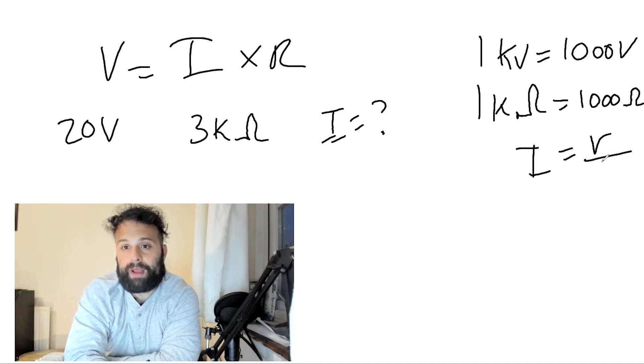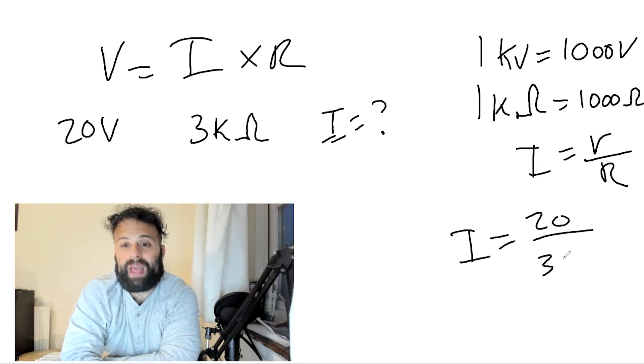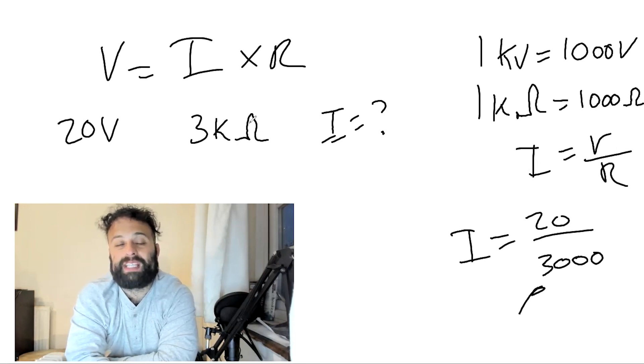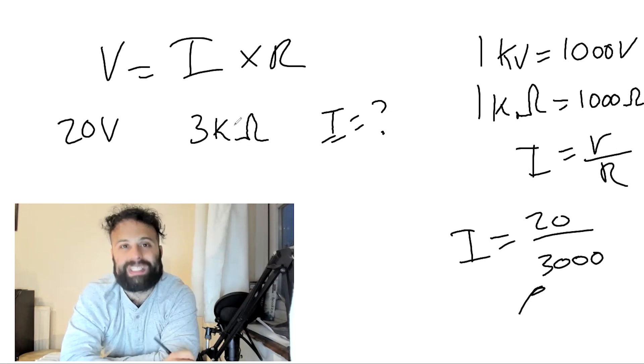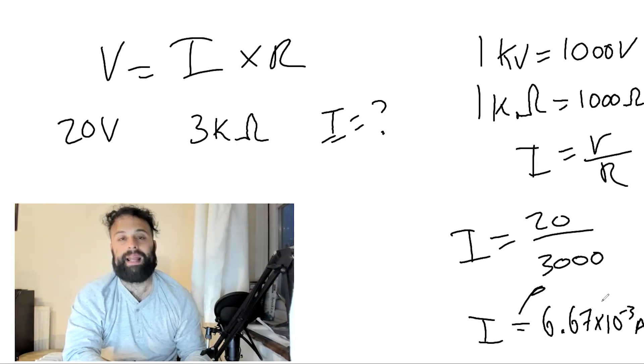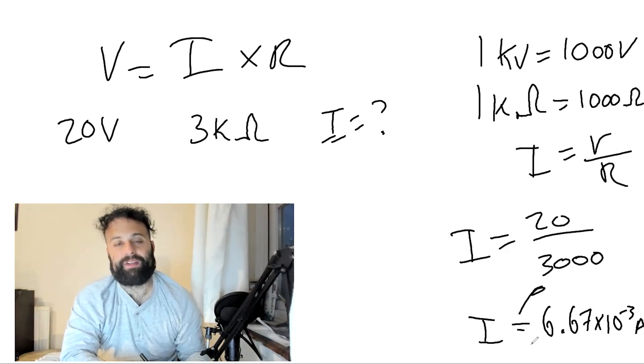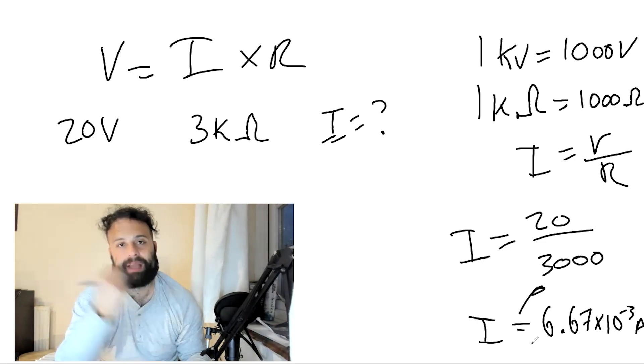So current is voltage divided by resistance. The current is voltage, which is 20, divided by 3,000. The reason why I write 3,000 is the resistance is 3 kiloohms, which is 3,000 ohms. And that gives me an answer of 6.67 times 10 to the minus 3 amps, a very small current.